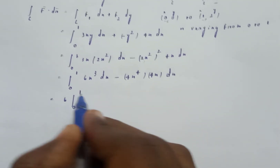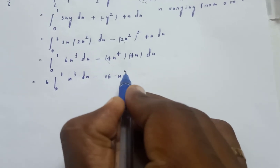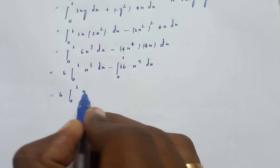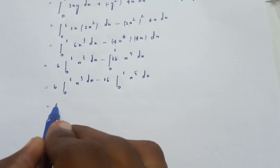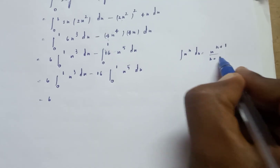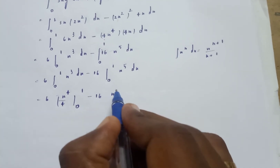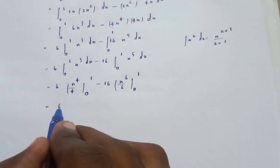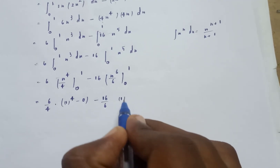Integrating: 6 is constant, so integral of x cube is x to the 4 by 4. And integral of x to the 5 is x to the 6 by 6. Evaluating from 0 to 1: 6 times 1 power 4 by 4, upper limit minus lower limit, minus 16 times 1 power 6 by 6 minus 0.